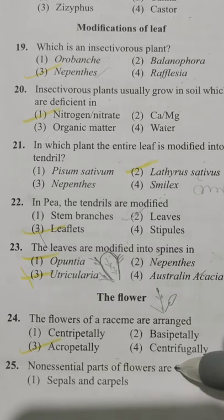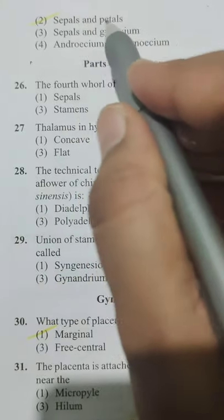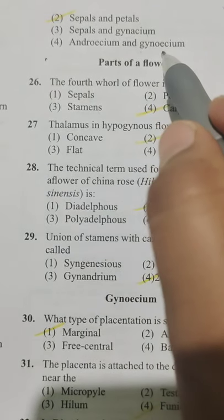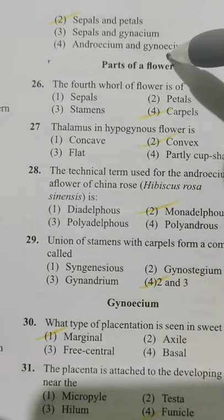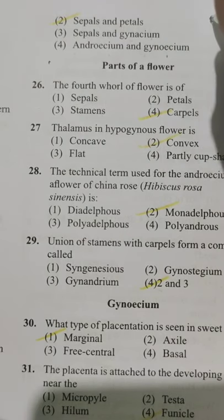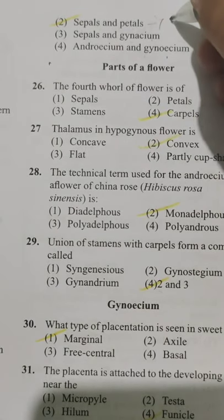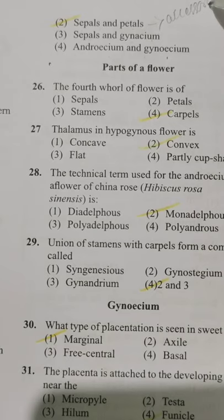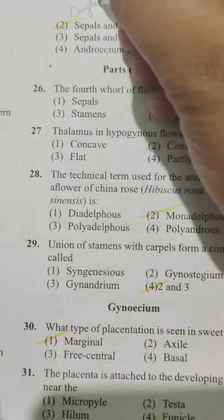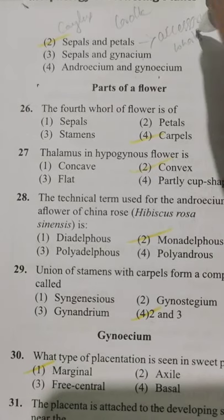Non-essential parts of flowers are — Option 1 sepals and carpels, Option 2 sepals and petals, Option 3 sepals and gynoecium, Option 4 androecium and gynoecium. The non-essential parts are those that do not participate in reproduction — these are sepals and petals, Option 2. They are also called accessory whorls — calyx and corolla.